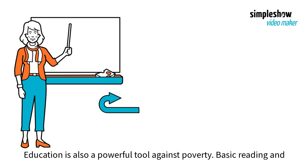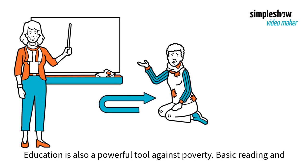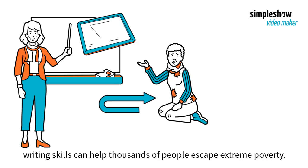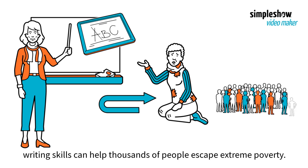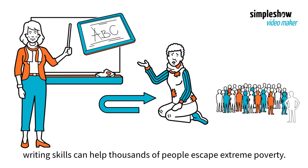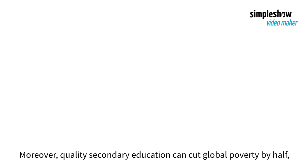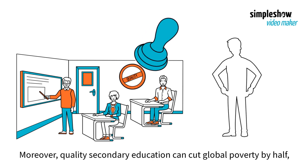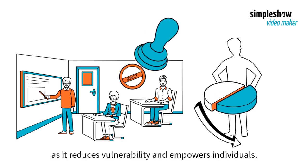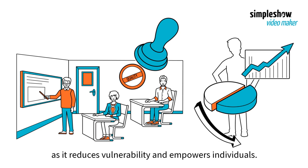Education is also a powerful tool against poverty. Basic reading and writing skills can help thousands of people escape extreme poverty. Moreover, quality secondary education can cut global poverty by half, as it reduces vulnerability and empowers individuals.